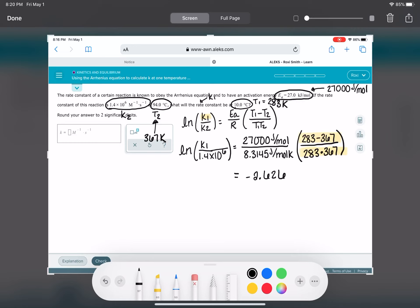Now do you remember what we need to do to get rid of the natural log so that we can solve for K1? So K1 over 1.4 times 10 to the 6 is equal to E to the negative 2.626.